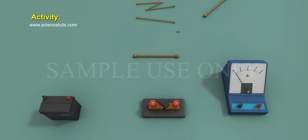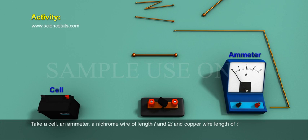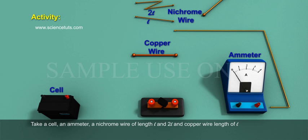Factors on which the resistance of a conductor depends. Activity: Take a cell, an ammeter, a nichrome wire of length L and 2L, and copper wire of length L.